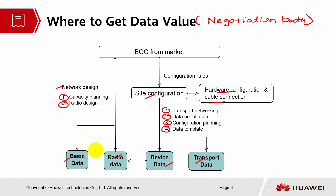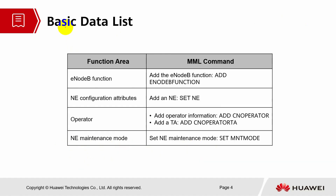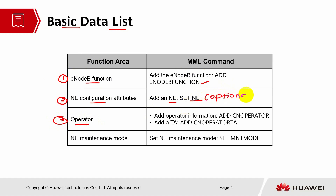There are four sections in a configuration: basic data, radio data, device data, and transport data. The basic data list is divided into a few sections. The first section is configuring eNodeB function — we need to add the eNodeB function. The second part is related to NE configuration attributes: add NE and set NE. Set NE is optional, it's not a mandatory command. The third section is operator level.